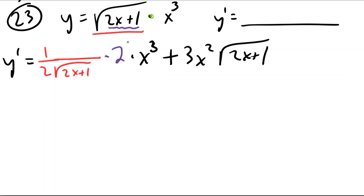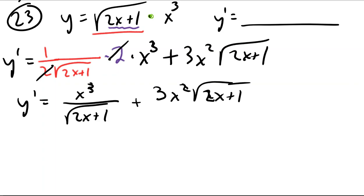Right off the bat I can see times two divided by two we're going to cancel, so that's pretty easy simplifying. And then the other thing I would expect to happen is we could probably push these two terms together if we got a common denominator.